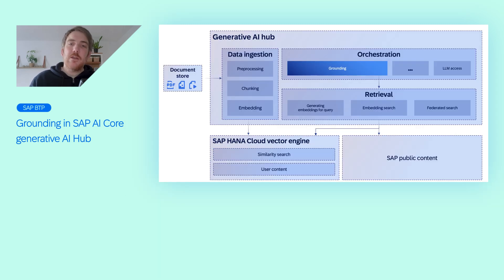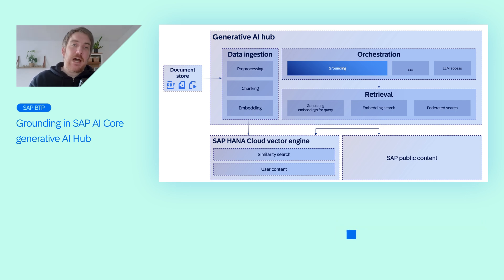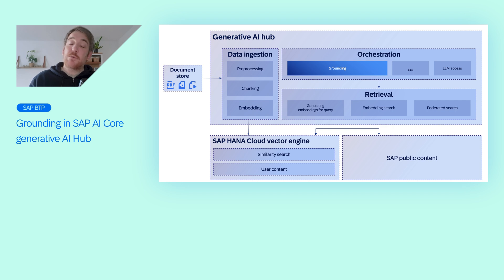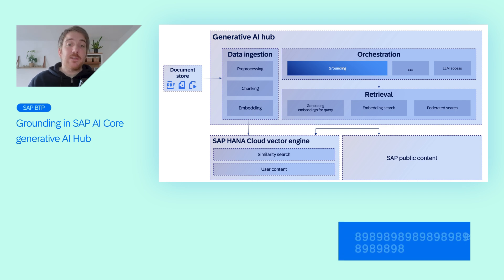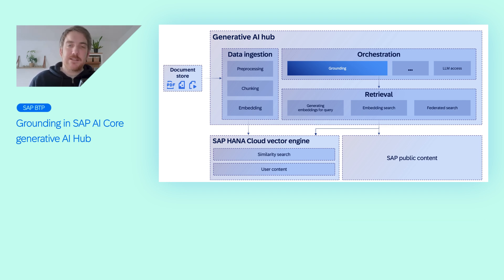Grounding orchestration retrieves relevant contextual chunks via vector search and feeds them to a large language completion model. This process delivers context-rich summarized responses to user queries. You can learn more about grounding in SAP AI Core Generative AI Hub by browsing our dedicated documentation.